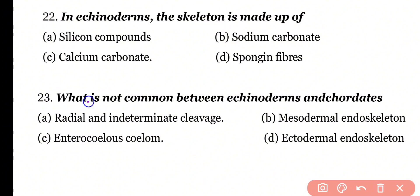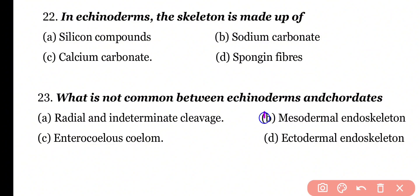Question 23: What is not common between Echinoderms and Chordates — Radial and indeterminate cleavage, mesodermal endoskeleton, enterocoelous coelom, or ectodermal endoskeleton? Correct answer is Option B — mesodermal endoskeleton is not common to both.